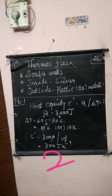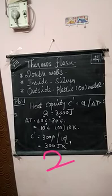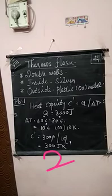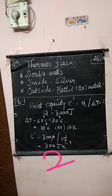The next topic is the thermos flask. A thermos flask is an insulating storage vessel — it keeps liquid hot or cold relative to the surroundings. For example, your father or mother may carry hot tea or coffee, and for that they put it in a thermos flask, which keeps the tea or coffee at the same temperature.